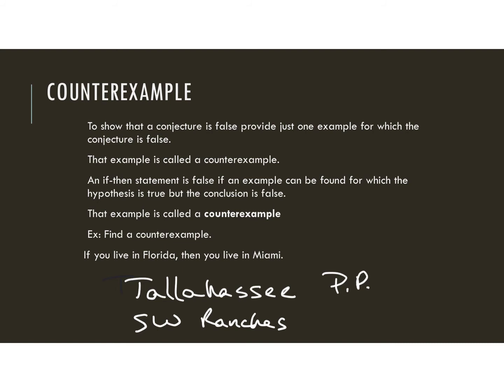When you are trying to do this, you're only finding a counterexample to prove a conjecture false. We're not going to try to prove a conjecture true. When it's false, all you need to do is come up with only one example to prove that statement is false.